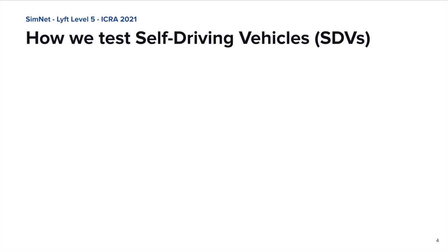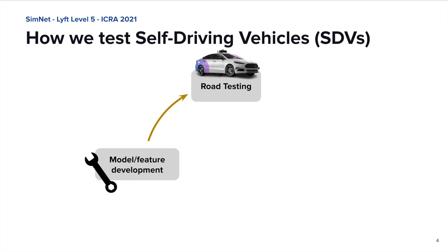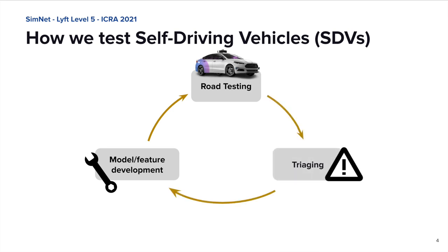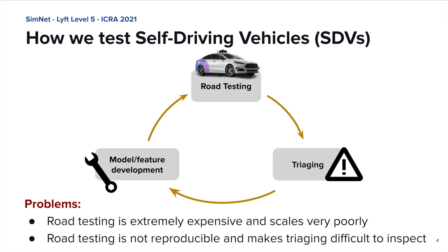Let me start by telling you how we usually test our self-driving vehicles, or SDVs. After a new model or feature has been developed, we request road testing in the real world. A safety driver is always in the car and can take control before things go sour. We then retrieve the logs of this session and evaluate them. However, road testing is really, really expensive — not only a matter of money, but also the timing involved: getting required permissions, setting up the vehicle, and contacting the safety driver. This makes road testing almost impossible to scale over a certain volume of features to test.